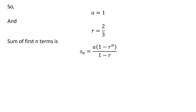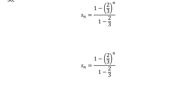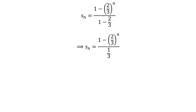The sum of the first n terms is equal to a times 1 minus r raised to the power of n, upon 1 minus r. Plugging in the values of a and r gives us the sum of first n terms is equal to 1 minus 2 upon 3 raised to the power of n, upon 1 minus 2 upon 3. Since 1 minus 2 upon 3 equals 1 upon 3, further simplification gives us the sum of first n terms is equal to 3 times 1 minus 2 upon 3 raised to the power of n.